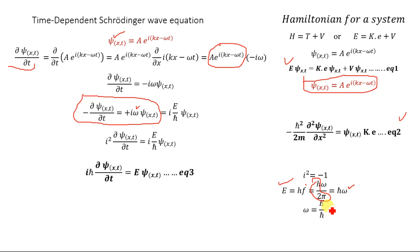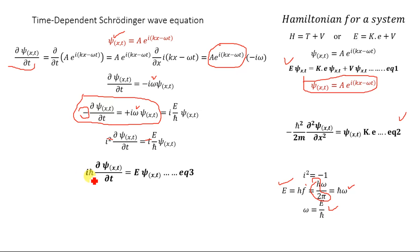Substituting ω = E/ℏ, and noting that −1 = i², we replace the minus sign with i². The i² cancels with the existing i factor. Multiplying both sides by ℏ gives us: iℏ · ∂ψ/∂t = E · ψ(x,t). We name this Equation 3.